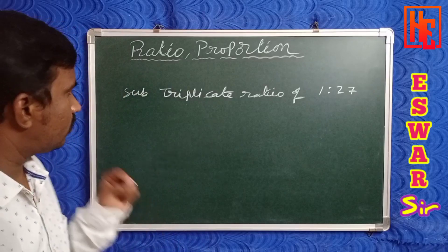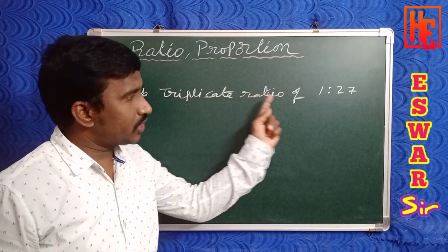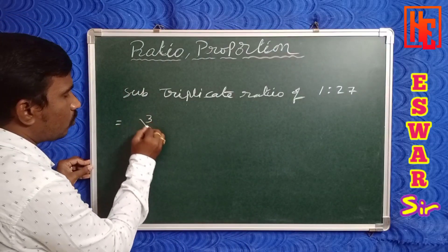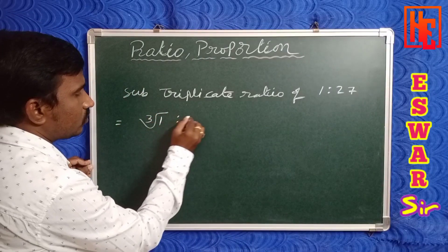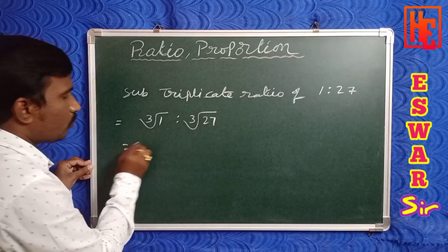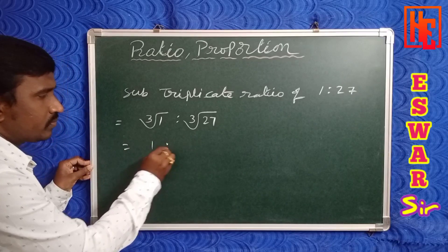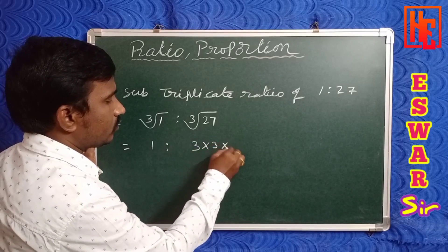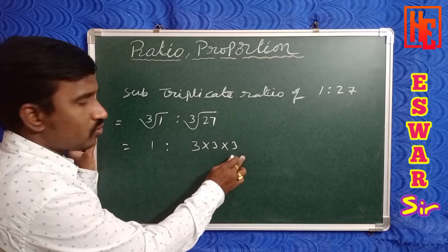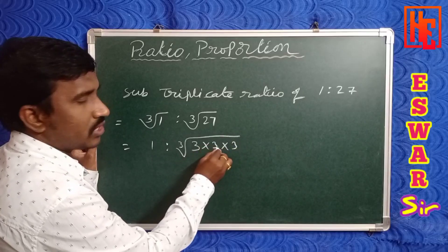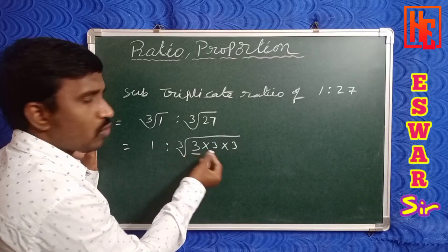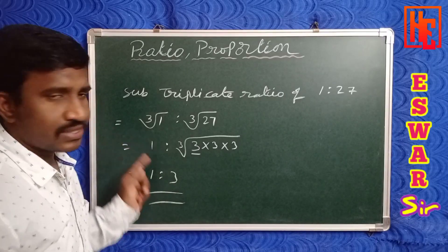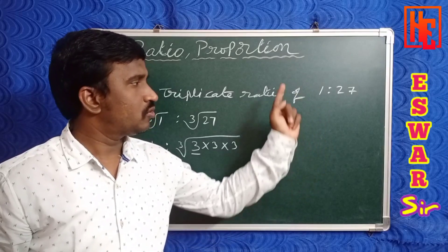Take one more example: find the sub-triplicate ratio of 1 is to 27. Sub-triplicate ratio means cube root of the first term is to cube root of the second term. Cube root of 1 is 1; cube root of 27 — since 27 = 3 × 3 × 3 — is 3. So 1 is to 3 is the sub-triplicate ratio of 1 is to 27.